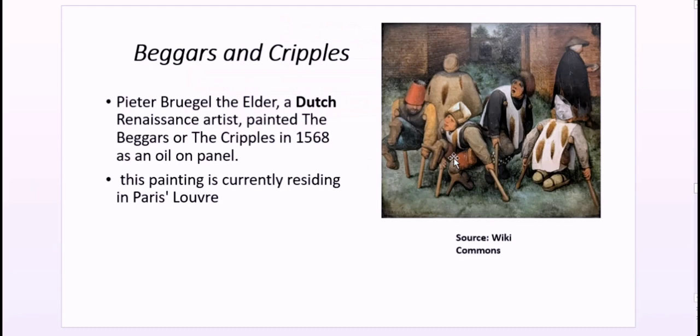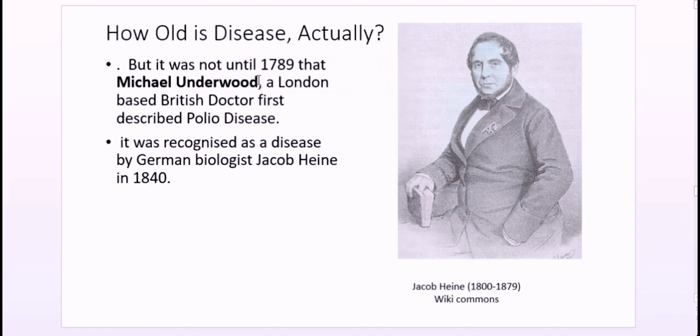Glimpses of polio disease also appear in the Renaissance era, when artist Pieter Bruegel painted 'The Cripples' in 1568, a panel painting showing the condition of polio patients using wooden crutches. The first medically documented case was described by Michael Underwood, a London-based British doctor. The disease was formally recognized as a distinct condition by German biologist Jacob Heine in 1840. Unfortunately there is no picture of Michael Underwood, but a picture of Jacob Heine exists — he was born in 1800 and died in 1879.